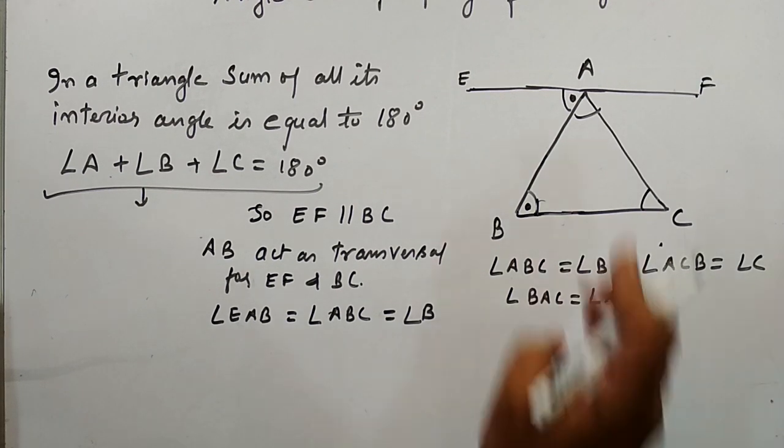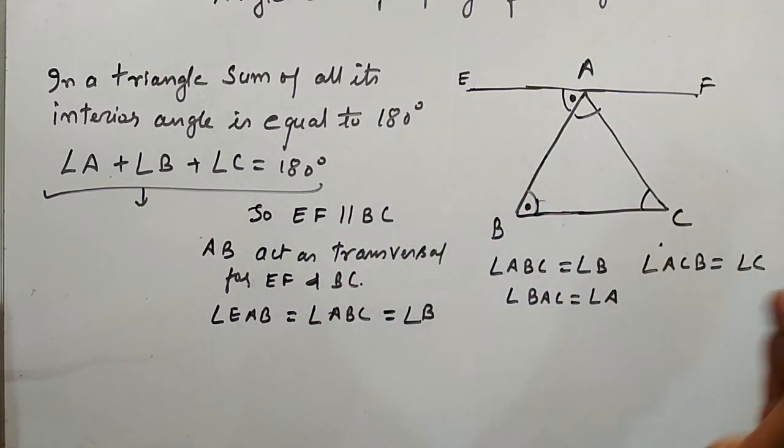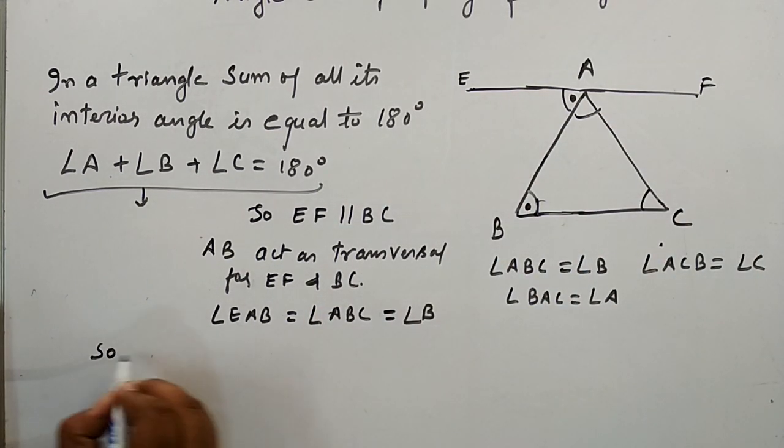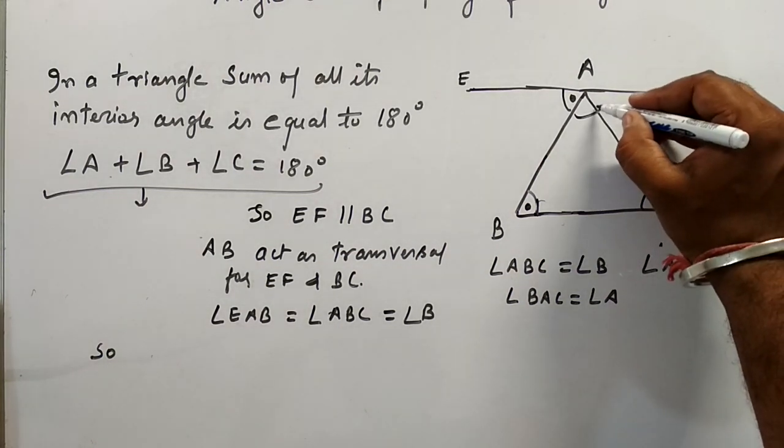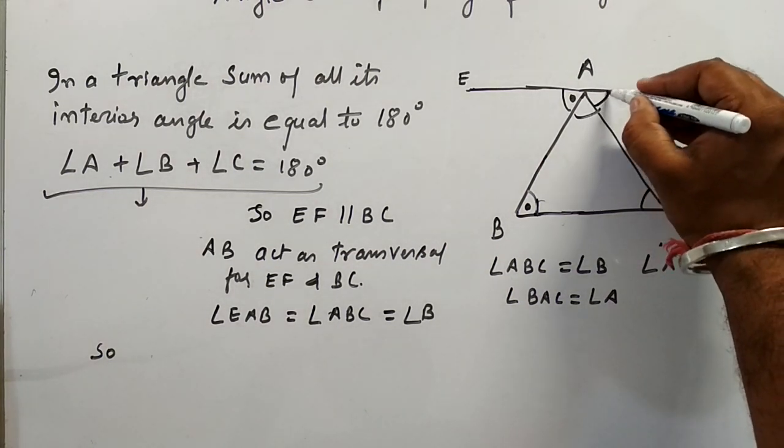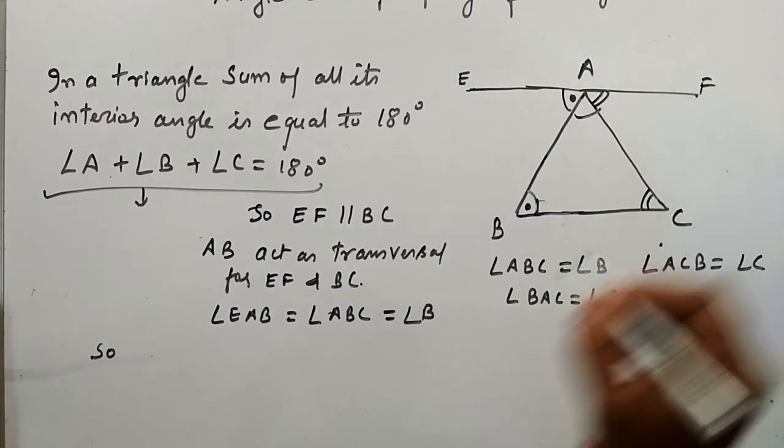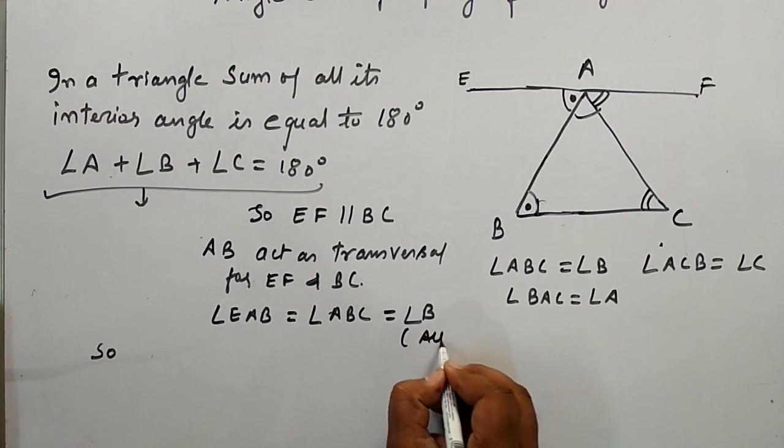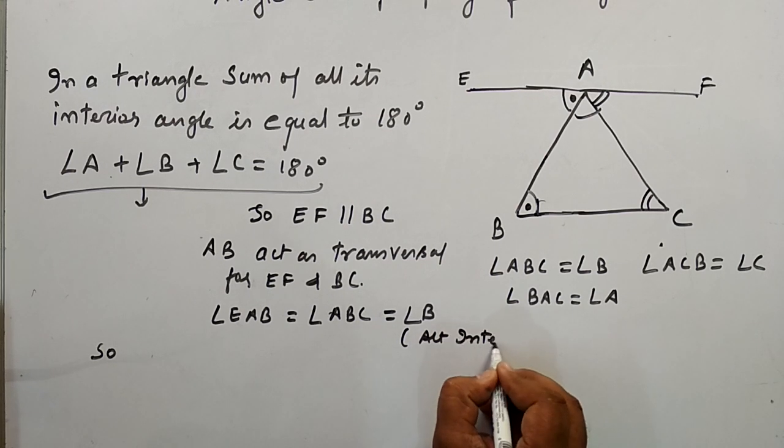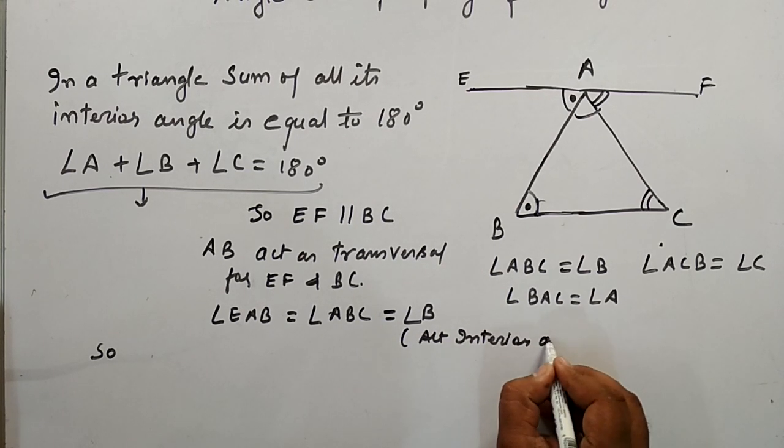Also, this AC is transversal for EF and BC. So these two angles are the pair of alternate interior angles.